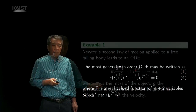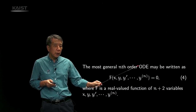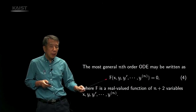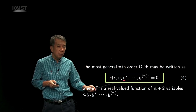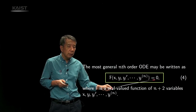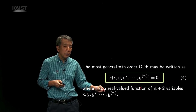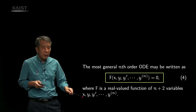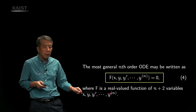The most general nth order ordinary differential equation may be written as capital F of x, y, y prime, and the nth derivative of y is equal to 0, where capital F is a real-valued function of n plus 2 variables: x, y, y prime, and the nth derivative of y.